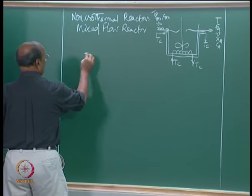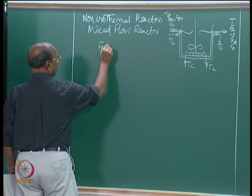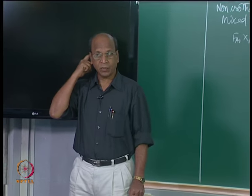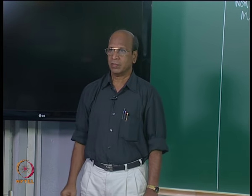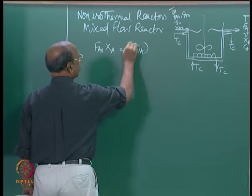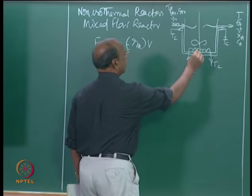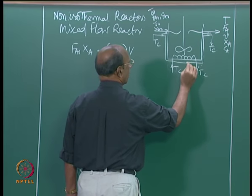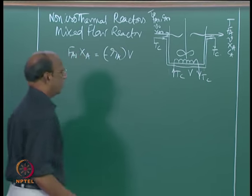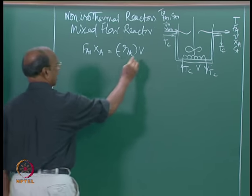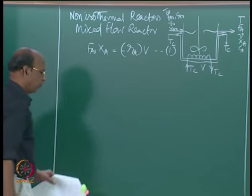The material balance you already know: F_a0 times X_a equals minus r_a times V, where V is the total volume. Tau is volume divided by volumetric flow rate - that is already known. This is equation number 1.